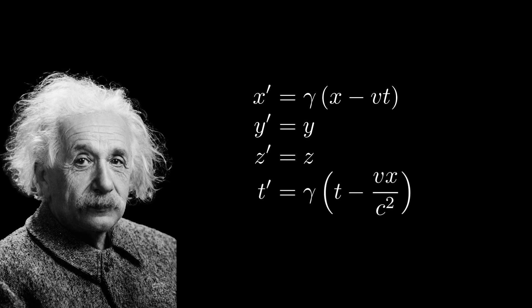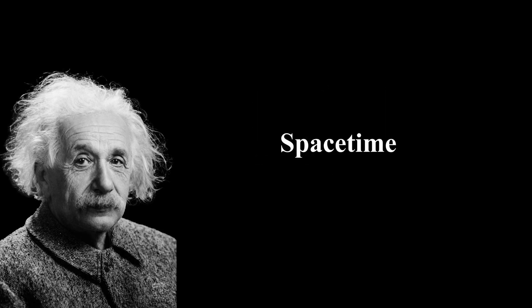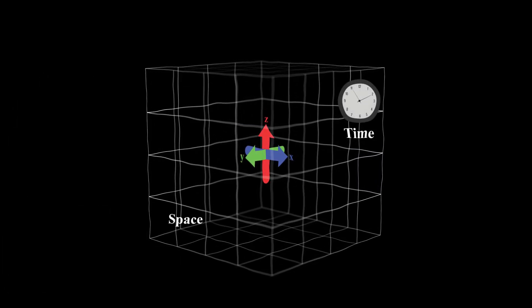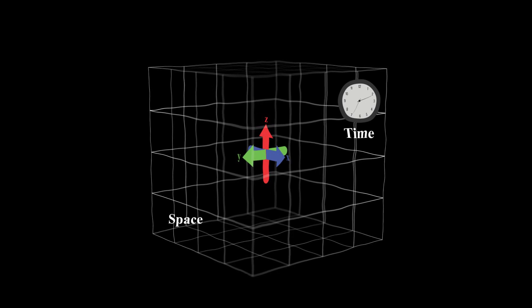Einstein uses a mathematical model that is called spacetime to describe our universe. Spacetime fuses three dimensions of space and one dimension of time into a single four-dimensional continuum.